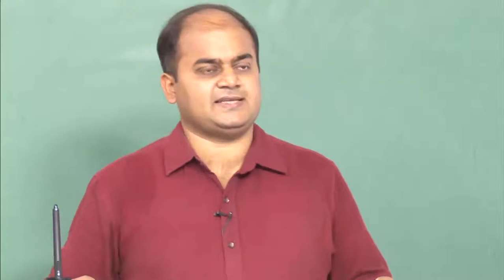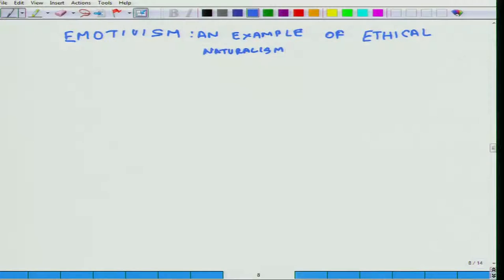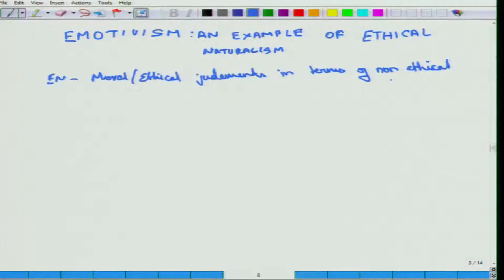Let us talk about an example of Ethical Naturalism. If you look at the screen, we have something called Emotivism. We have been talking about Ethical Naturalism, and Ethical Naturalism, as you would remember, is about understanding Moral or Ethical Judgements in terms of Non-Ethical Judgements. So, this happens to be the crucial defining feature of Ethical Naturalism.